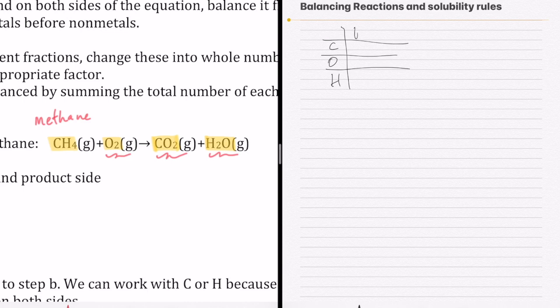On the reactant side, I have 1 carbon; on the product side, also 1 carbon. So carbons are balanced. For oxygen, I have 2 on the reactant side but 3 on the product side. For hydrogen, 4 on the reactant side and 2 on the product side. Your goal in balancing is to avoid doing anything to things that are already balanced. So I don't want to touch anything with carbon. The things still highlighted are the ones I can manipulate.